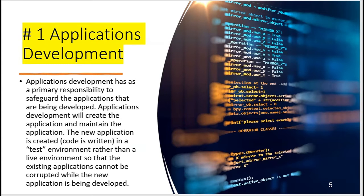We're starting with applications development. What's their role and who's on the team? Applications development has as a primary responsibility to safeguard the applications being developed. The people on the yellow team will create the application, maintain it, and code it in a test environment rather than a live environment, so that existing applications are not corrupted while the new application is being developed.